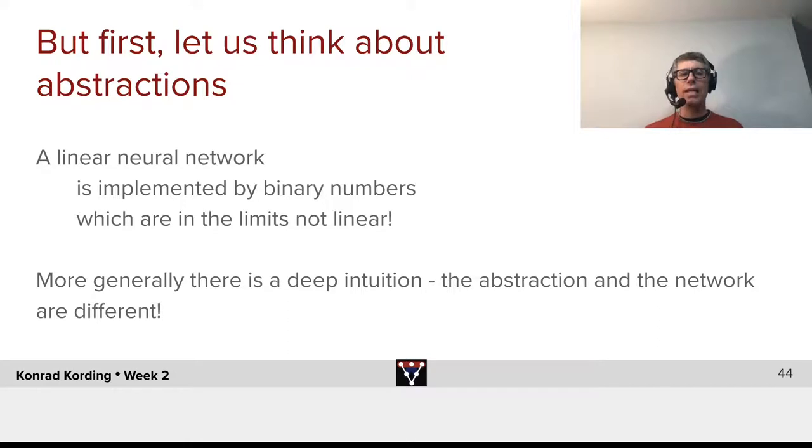Now, if we talk about linear neural networks, we can write equations that make this be linear. But ultimately, it is implemented by binary numbers. Binary numbers are very much not linear.